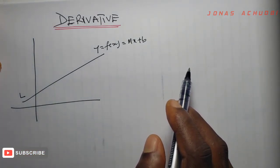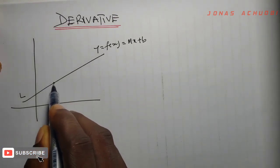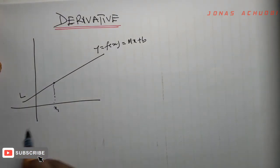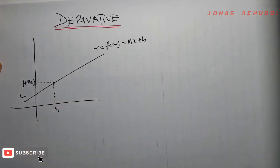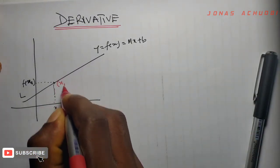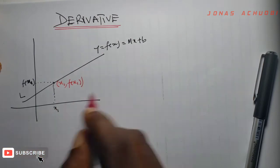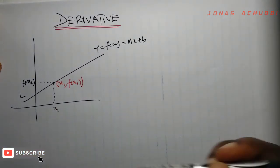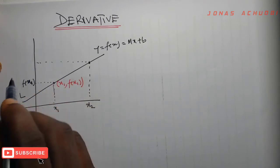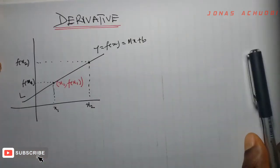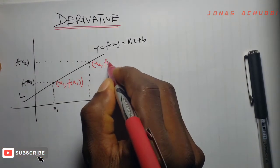Suppose we wish to find the slope of a point on this straight line. What do we do? If this point is point x1, the y-value of this point is f of x1. So the coordinate at this point is x1 for the x-coordinate and f of x1 for the y-coordinate. To find the slope, we need another point, say x2, and the functional value of x2 is f of x2. So the coordinate of the second point is x2, f of x2.